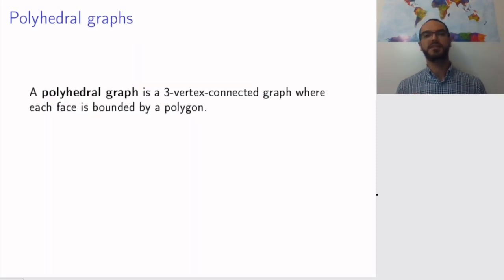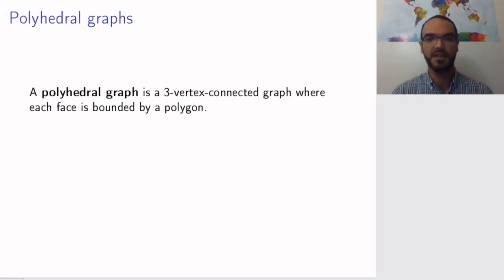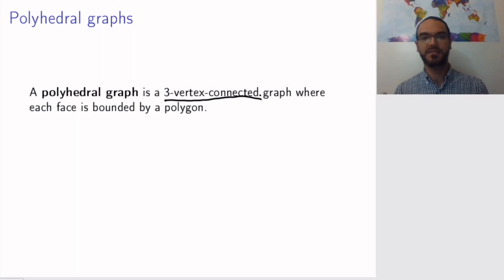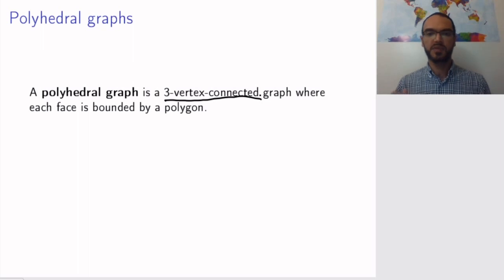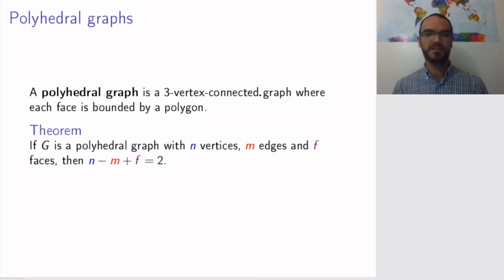To make things precise, we define something called a polyhedral graph. A polyhedral graph is a graph that is three-vertex-connected and where each face is bounded by a polygon. This three-vertex-connected condition is seemingly coming out of nowhere; one can show that it is equivalent to the graph coming exactly from the kind of polyhedron we were looking at, but we will not go into the details of this. The point is that if you have a polyhedral graph with n vertices, m edges and f faces, since it is in particular connected and planar, it will satisfy Euler's formula.